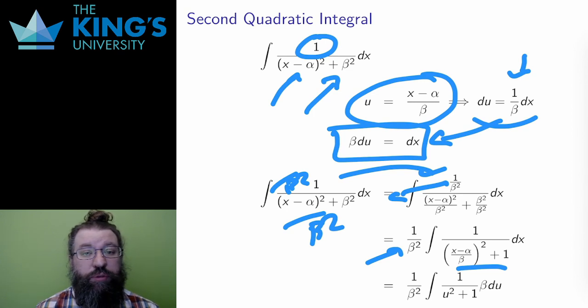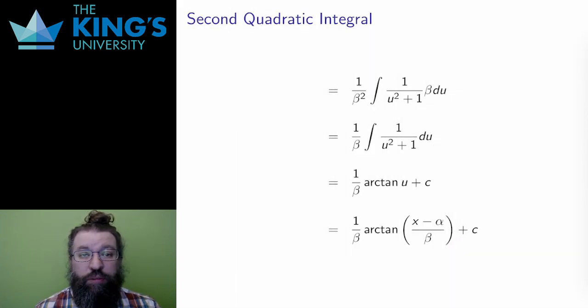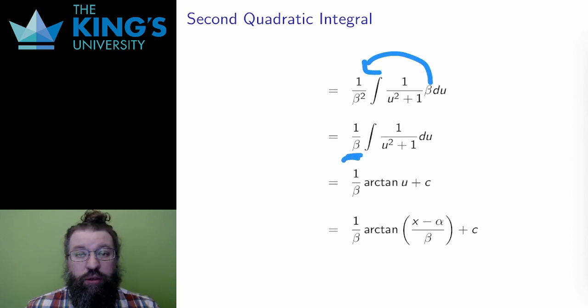Then I can do the substitution, x minus alpha over beta becomes u, and dx becomes beta du. From this point, I can pull out the beta again by linearity and cancel off 1 beta from the beta squared into the denominator, leaving 1 over beta in front of the integral.